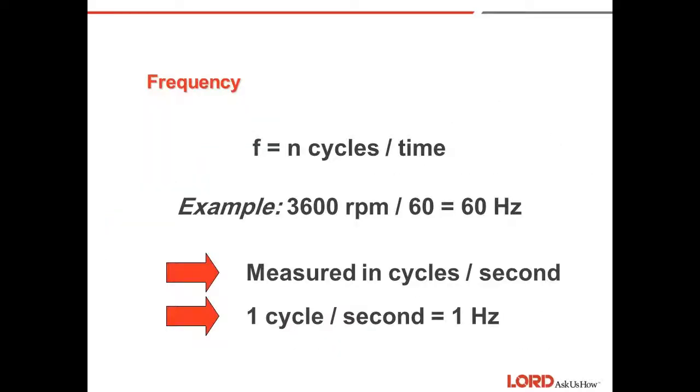Frequency. Frequency is the number of cycles that occur in the unit of time. It is typically measured in cycles per second, also known as hertz. In this example, we may have a motor running at 3600 RPM, divide by 60, and you get 60 hertz.